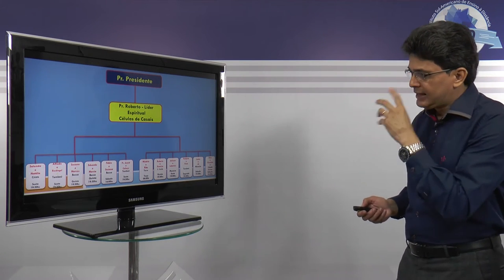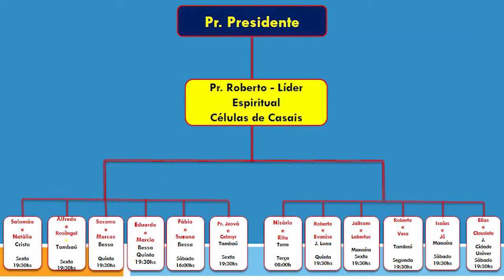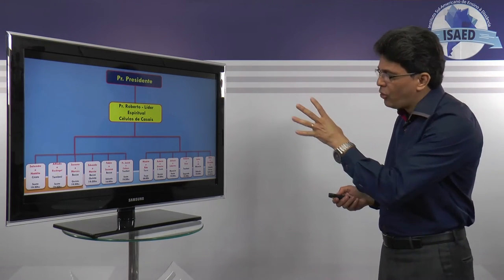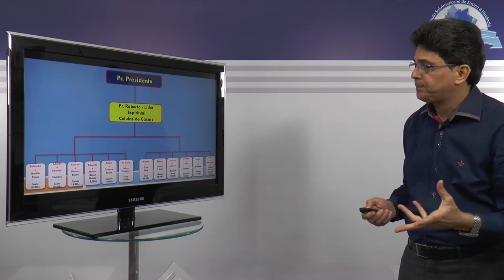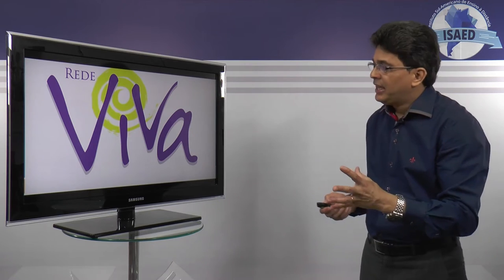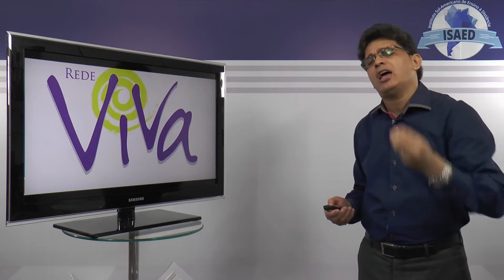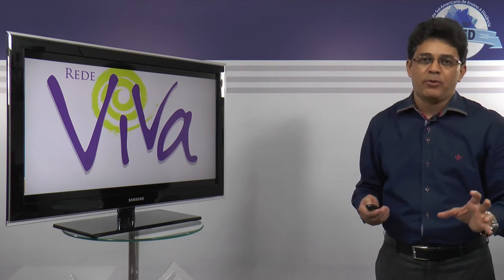Aqui eu fiz exatamente um recorte daquilo que eu faço com as minhas células. Eu tenho uma rede, apesar de ser o coordenador ou pastor das células, eu também tenho uma rede que é a rede das células de casais. Então, basicamente, eu coordeno desta forma. Acima da minha pessoa eu tenho um pastor-presidente e abaixo eu tenho exatamente meus líderes de células. E você pode dar um nome a esta rede, por exemplo, Rede Viva, ou qualquer outro nome que você queira dar.